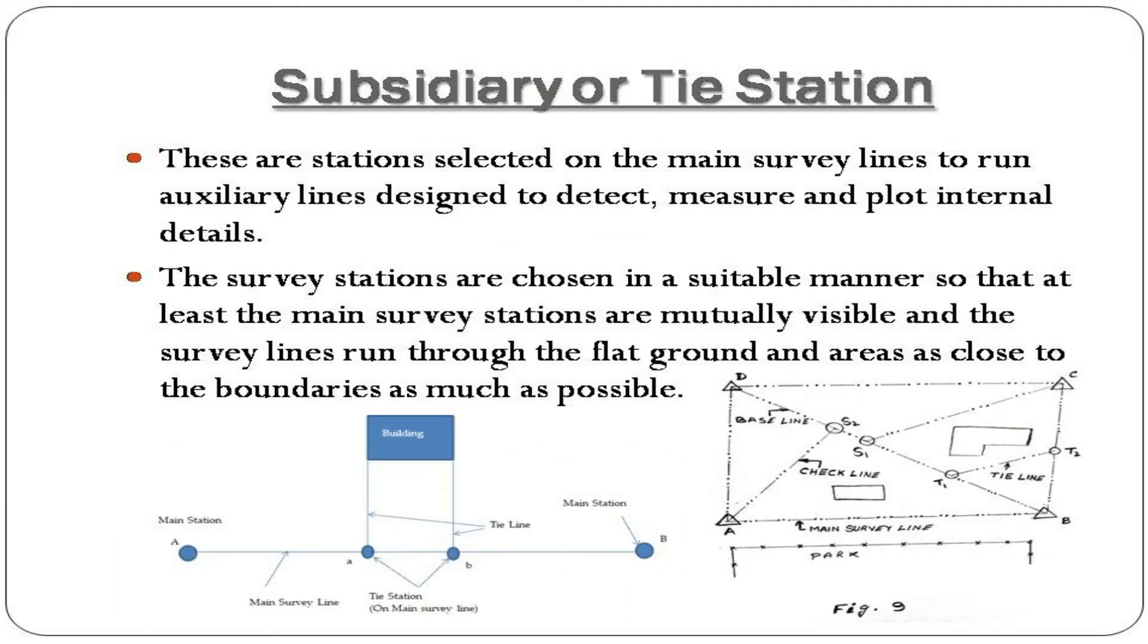Subsidiary or tie station: These are stations selected on the main survey lines to run auxiliary lines designed to detect, measure, and plot internal details. The survey stations are chosen so that at least the main survey stations are mutually visible and the survey lines run through flat ground as close to the boundaries as possible.